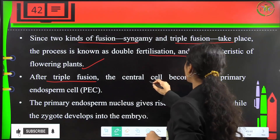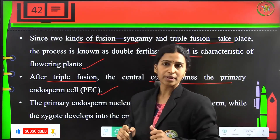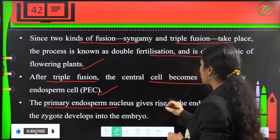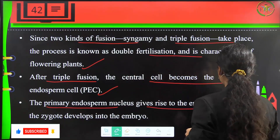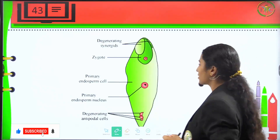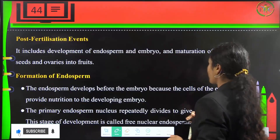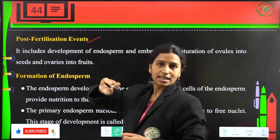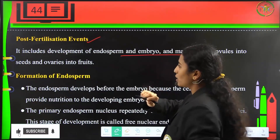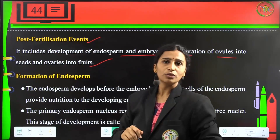After triple fusion, the central cell becomes the primary endosperm cell (PEC). The primary endosperm nucleus (PEN) gives rise to endosperm while the zygote develops into the embryo. Post-fertilization events include development of endosperm and embryo, and maturation of ovules into seeds and ovaries into fruits.